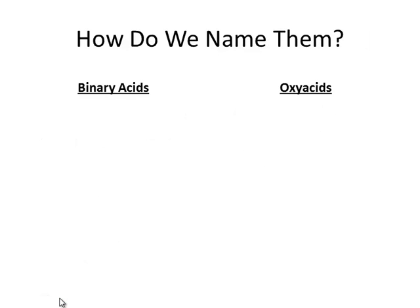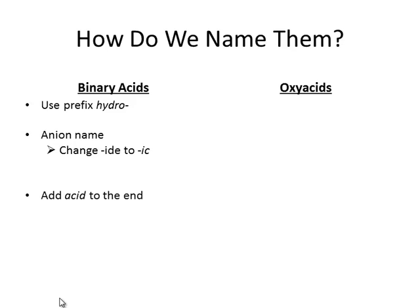For naming binary acids, we use the prefix 'hydro.' Then we take the anion name, replace the -ide ending with -ic, and put 'acid' at the end.